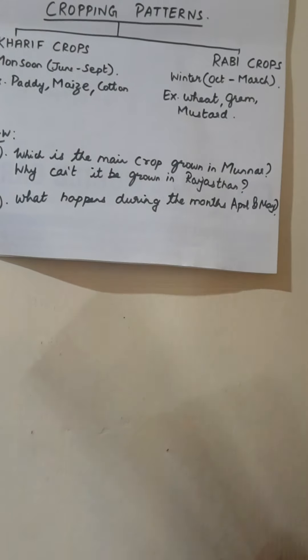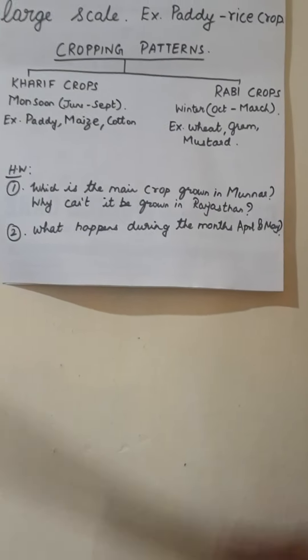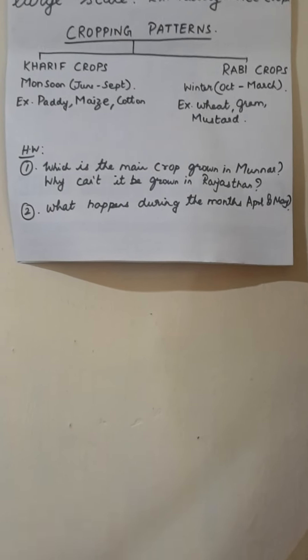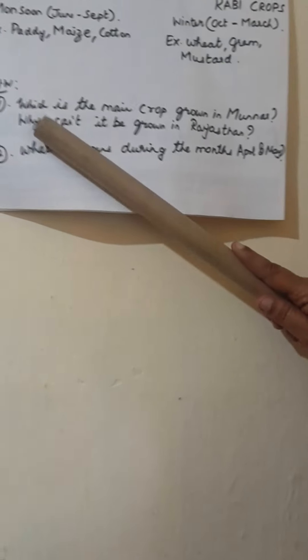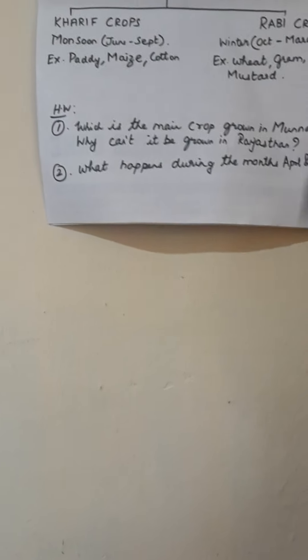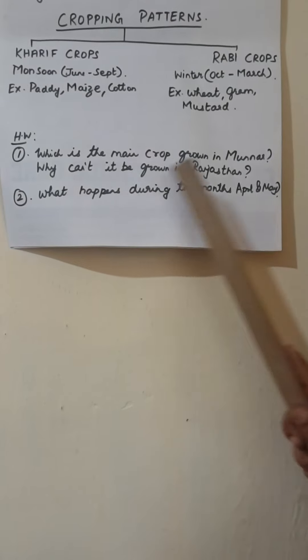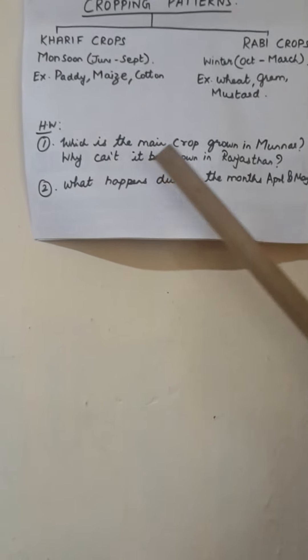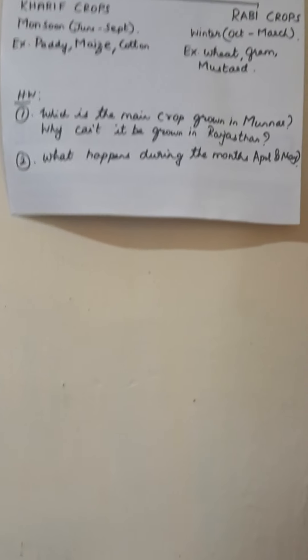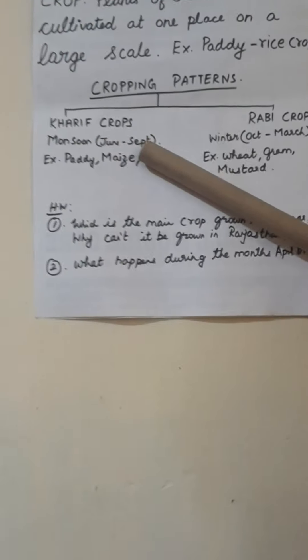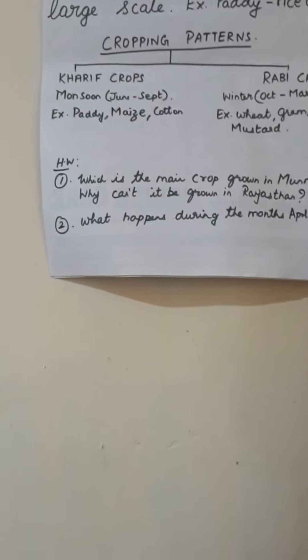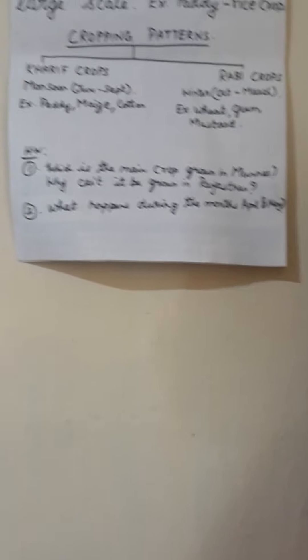You have homework, children. Think and write answers to two questions in your notebook, and post pictures of your completed homework on the WhatsApp group. First question: which is the main crop grown in Munnar, and why can't that particular crop be grown in Rajasthan? Second question: what happens during the months of April and May? We have covered June to September and October to March, so find out what happens in April and May.